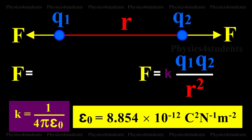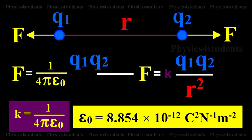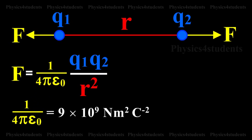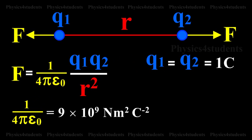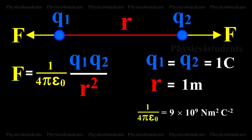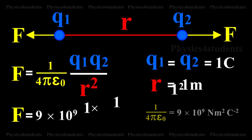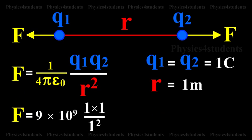F is equal to 1 by 4 pi epsilon 0 into Q1 into Q2 by r squared, and 1 by 4 pi epsilon 0 is equal to 9 into 10 raised to 9 Nm squared C to the power of minus 2. In the above equation, if Q1 into Q2 is equal to 1 C and r is equal to 1 m, then F is equal to 9 into 10 raised to 9 into 1 into 1 by 1 squared, which is equal to 9 into 10 raised to 9 Nm.